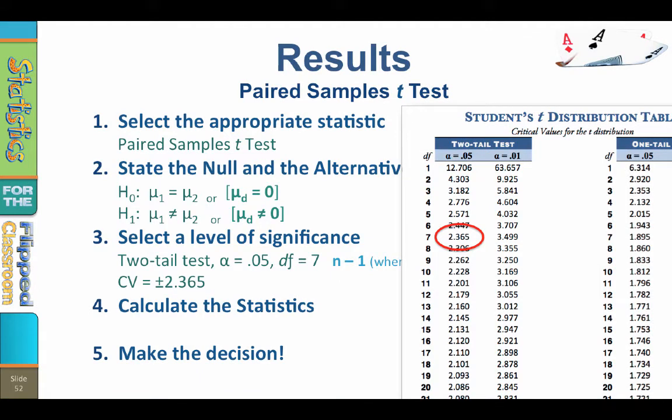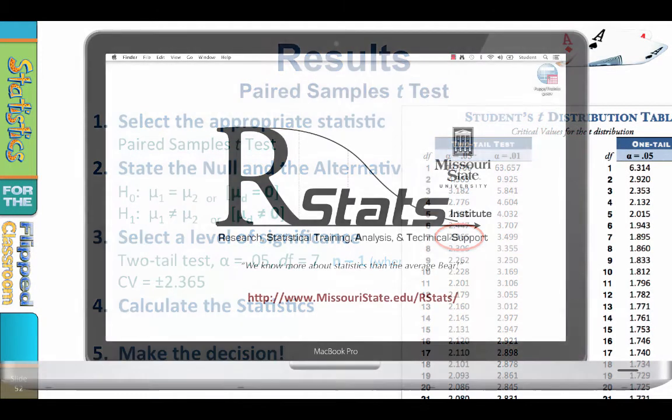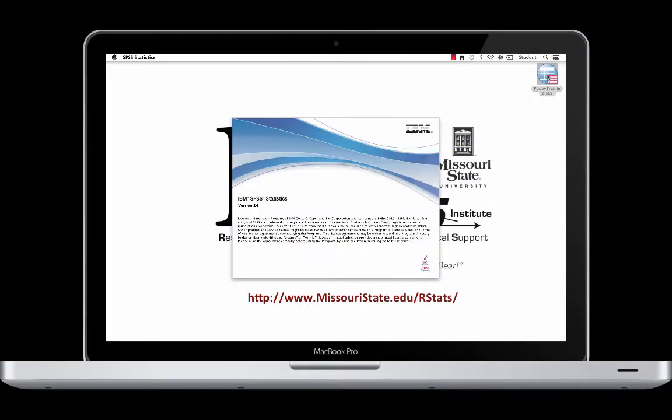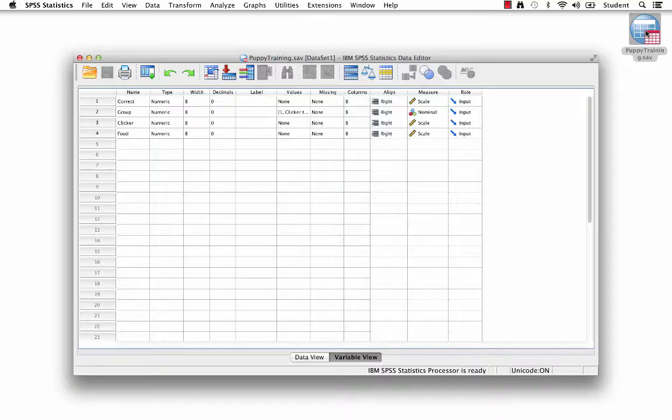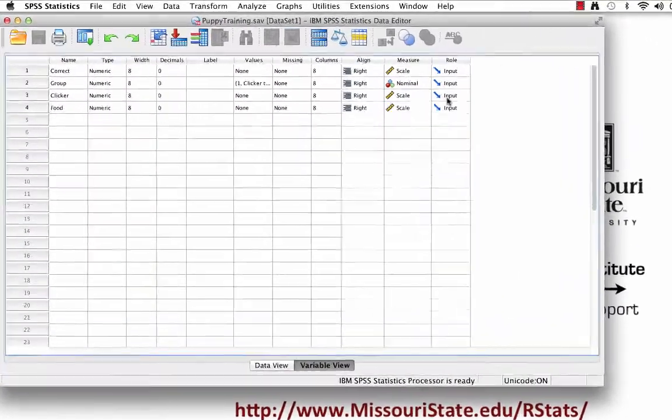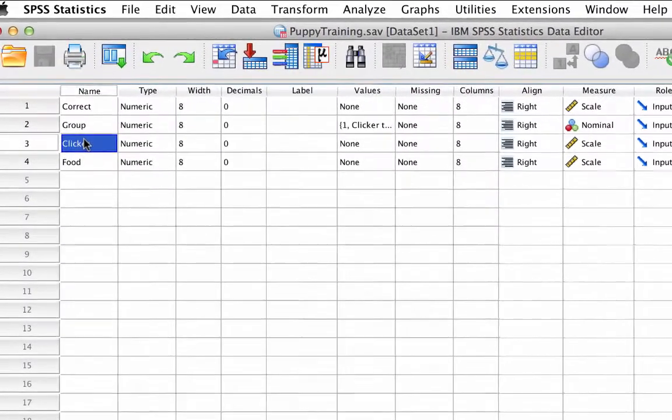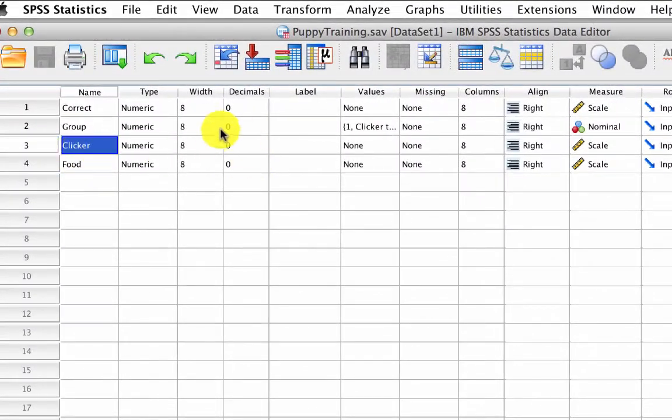Step 4. Calculate the statistics. So now we need to turn to SPSS. The first of the two variables that we will use is called clicker. It has zero decimals and is at the scale level. The second variable is food, which also has zero decimals and is also at the scale level. We have two scale level variables that have been matched for each pair of dogs.